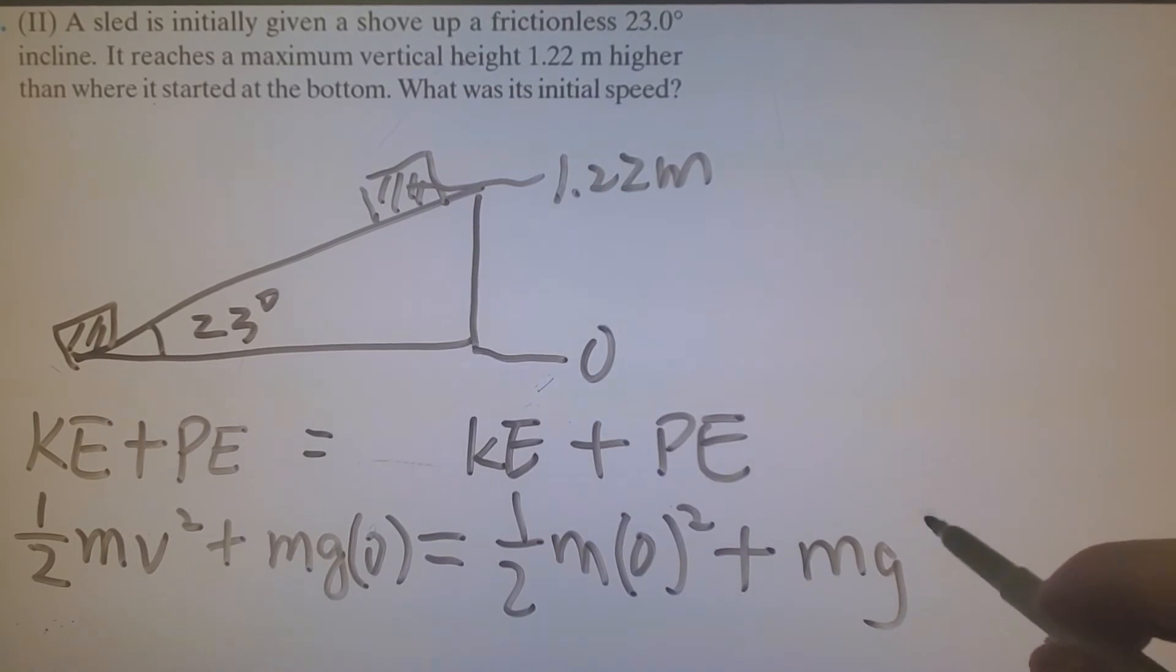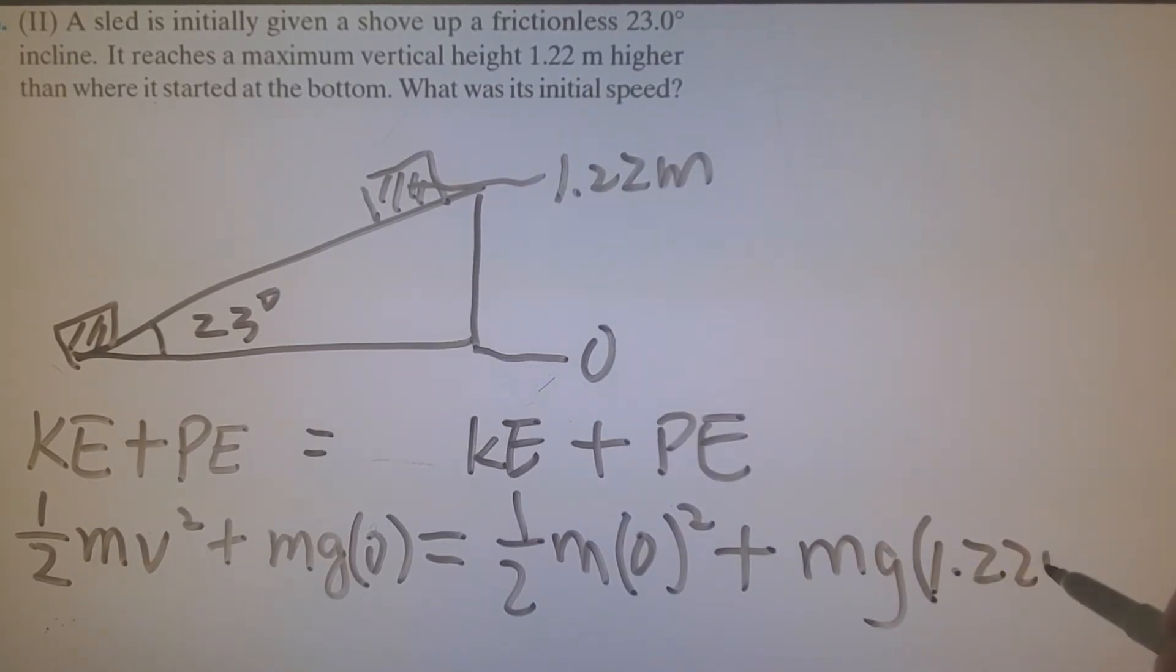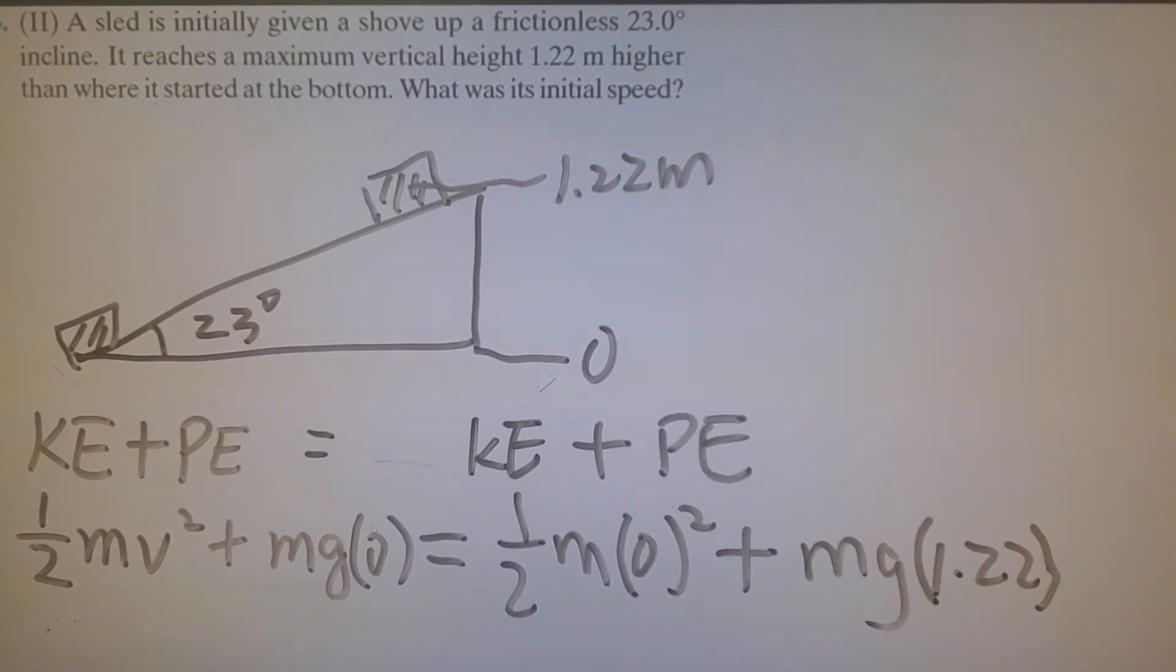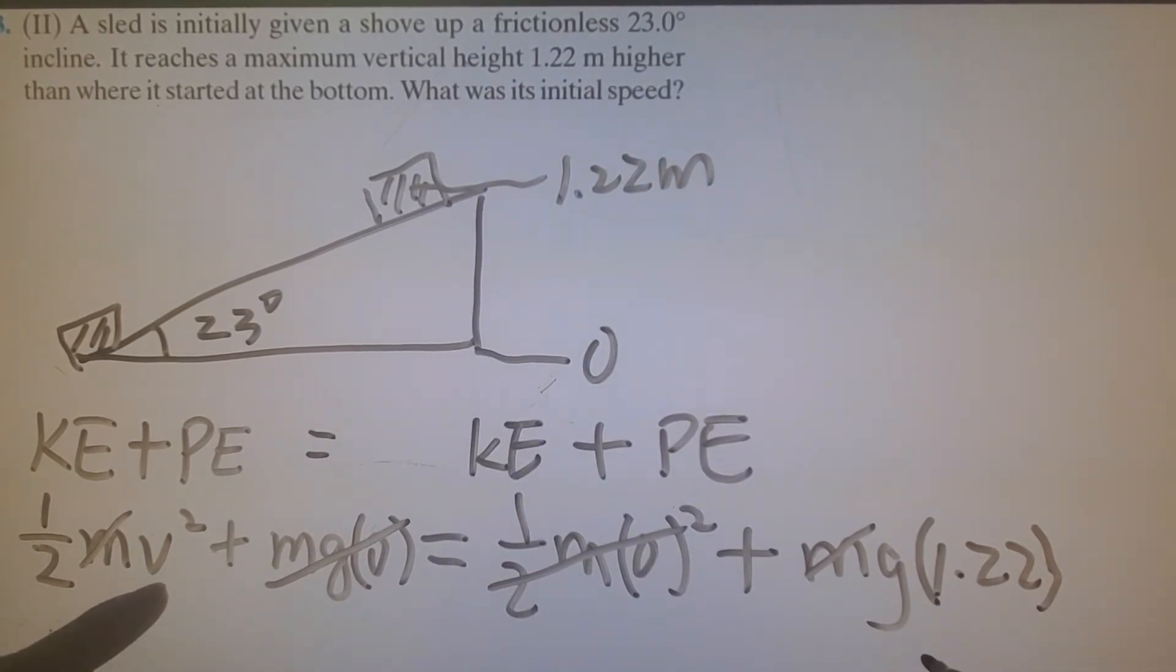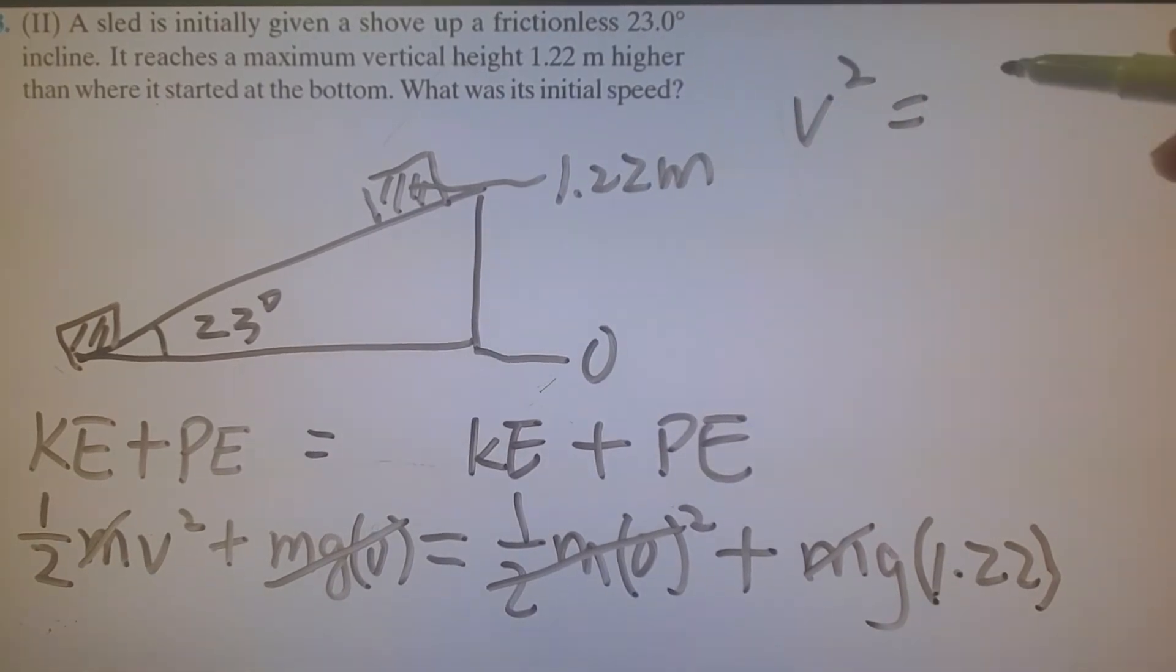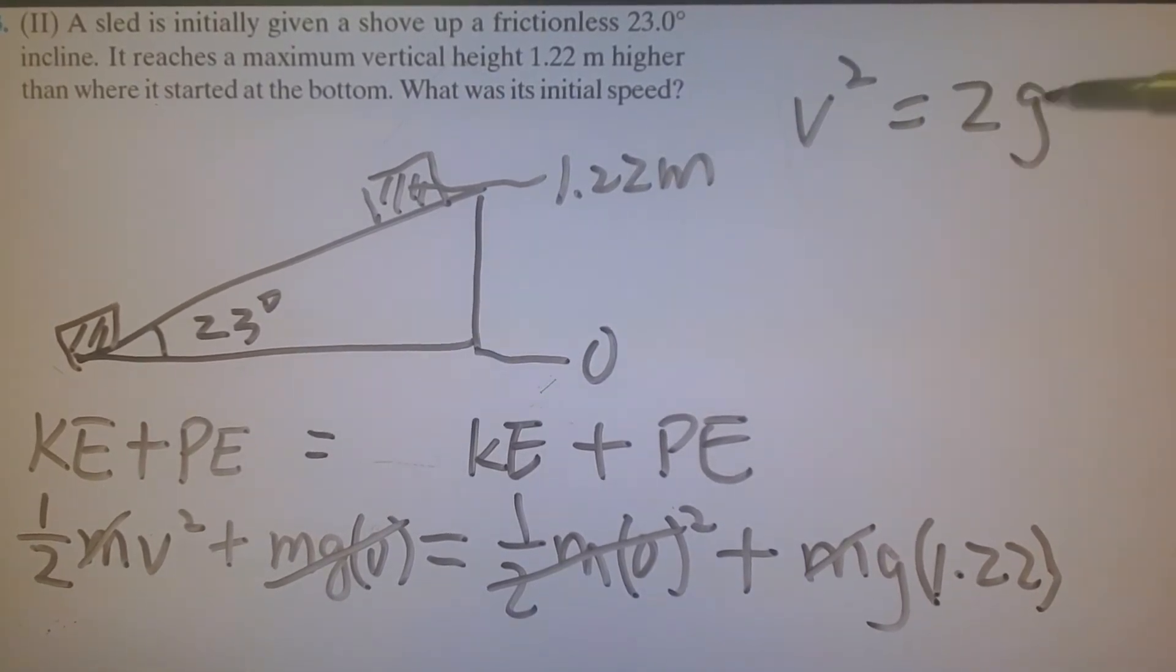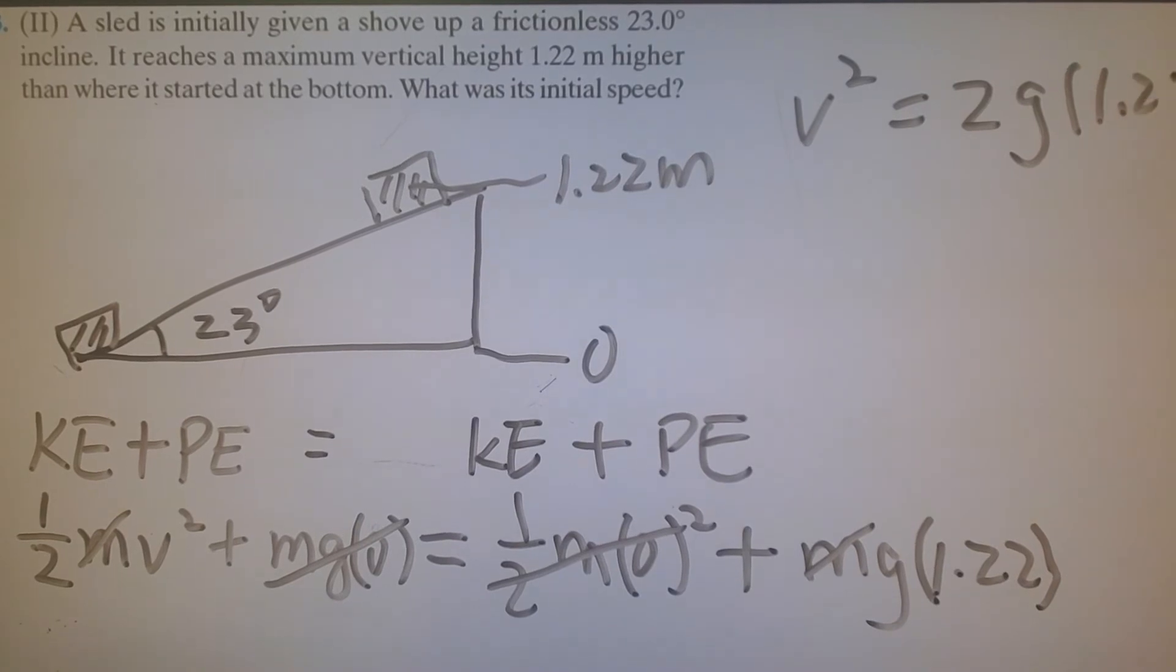What is h? It's 1.22 meters. This term is gone because it's 0. This is gone. I'm going to divide m on both sides. I'm looking for v squared, so I try to solve for v. I need to move the 2 to the other side. So v squared equals 2 times g times 1.22.